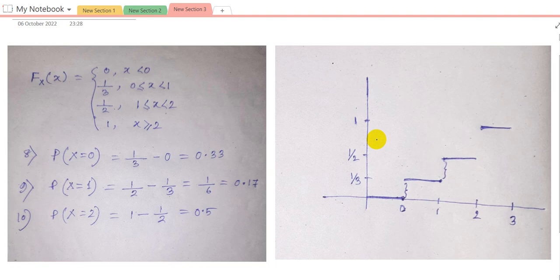In question 8, we have to find the value of P(X = 0). So the value of P(X = 0) is the jump from 0 to 1 which we can see from the graph.